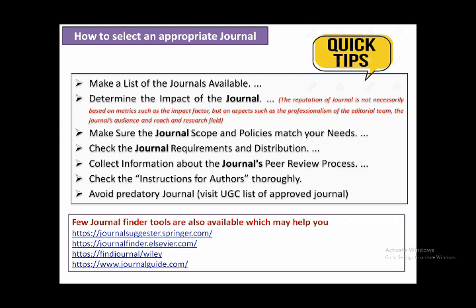Check the instructions for authors thoroughly — check them twice. Avoid predatory journals. Visit the UGC list of approved journals, as UGC has provided a list of fake and predatory journals. Always publish in good quality journals. There are also journal finder tools available, such as those from Springer and Elsevier. These tools ask for some keywords and then suggest a list of journals suitable for publication of your paper.